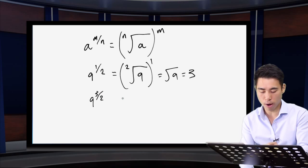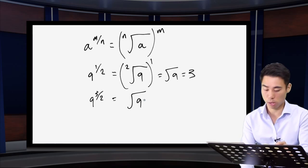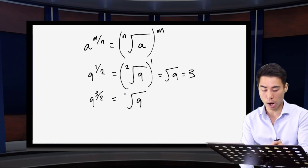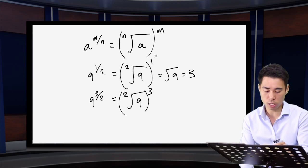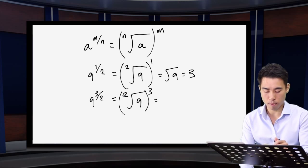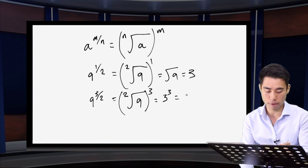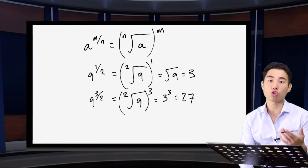Slightly more complicated: if I have nine to the power three over two, I'm still looking at the square root of nine to begin with, but now this is all raised to the power three. Working with the brackets first, the square root of nine gives me three, and then three to the power of three is 27. As you go through exercises, make sure you're familiarising yourself with square numbers and cube numbers.